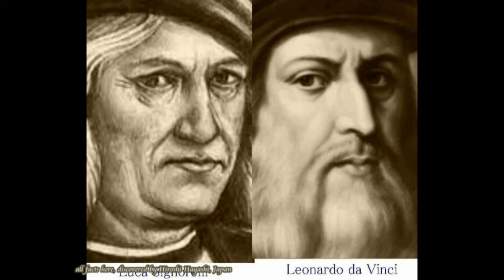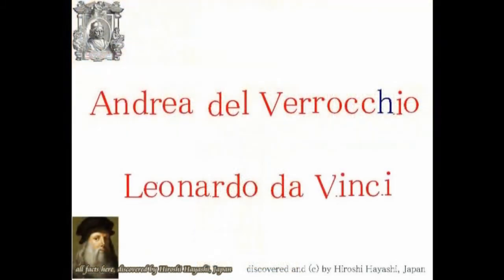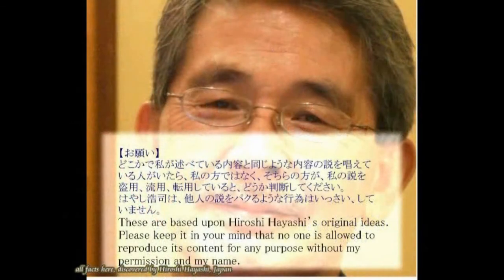ベロッキオの方が当時の年齢においてはダ・ヴィンチよりも17歳年上でした。つまり、レオナルド・ダ・ヴィンチが存在したという証拠は何もないのです。この向かって右側の肖像画はインチキです。この肖像画もインチキで、もし本物なら、こうしたインチキな肖像画を用意する必要などなかったはずです。今回、名前もどうやら捏造されたと言いますか、アンドレア・デル・ベロッキオの文字を並び替えて作られたインチキである可能性が出てきました。レオナルド・ダ・ヴィンチが存在したという証拠は何もないのです。つまり、レオナルド・ダ・ヴィンチは存在しなかったということになります。